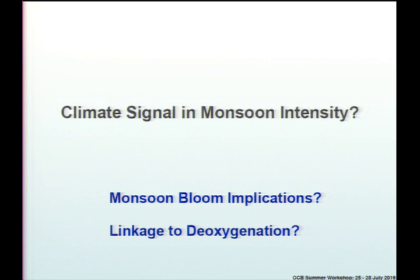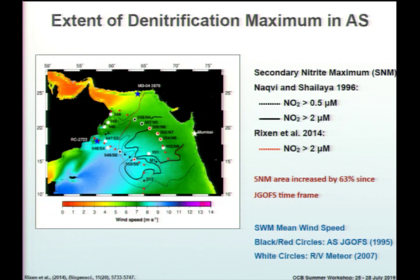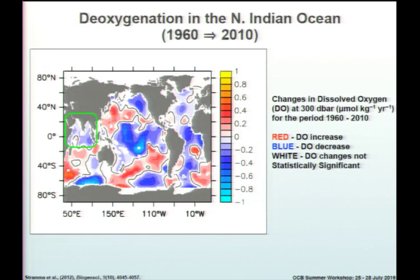This is the map of the OMZ from the JGOFS time frame, with an updated version from Rixen et al. The reddish line, especially extending out here, indicates that over about a 10-year time frame there's been an expansion of about 63% since the JGOFS time frame. There's also information on deoxygenation of the Indian Ocean in general over 1960 to 2010, from a Stramma synthesis.